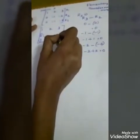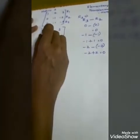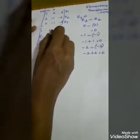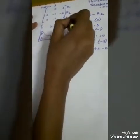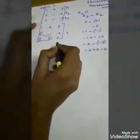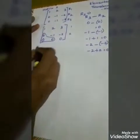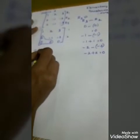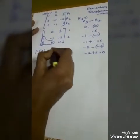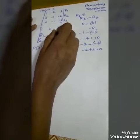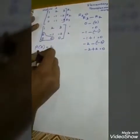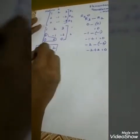After getting Echelon form, we count how many non-zero rows there are. Non-zero means not all entries are zero. Row 3 is fully zero — a zero row. Rows 1 and 2 each have at least one non-zero element. So the number of non-zero rows is 2. Therefore, rank of A equals 2.